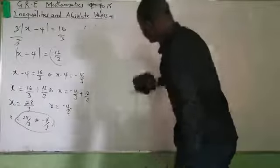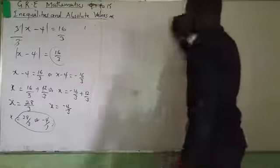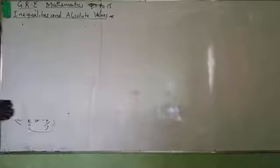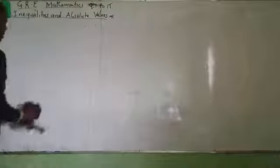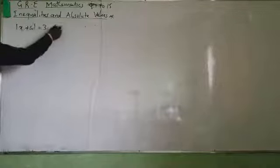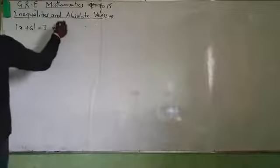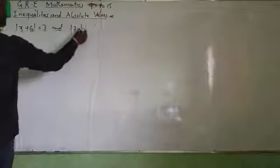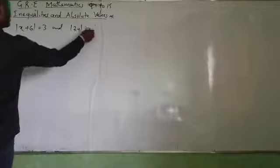You are free to drop your message. You can contact us on our WhatsApp line or email us. Now, I have absolute value of X plus 6 equals 3, and absolute value of 2Y equals 6.